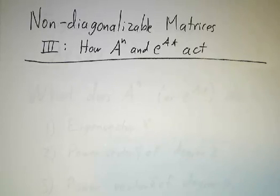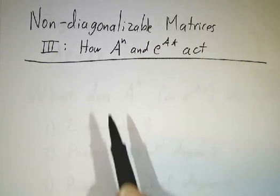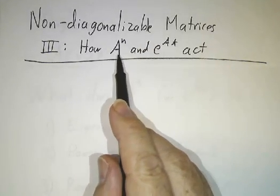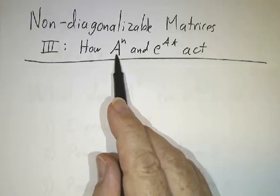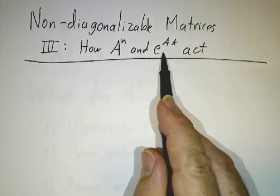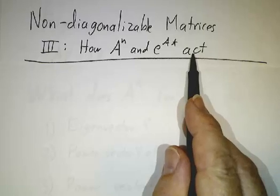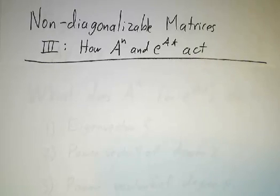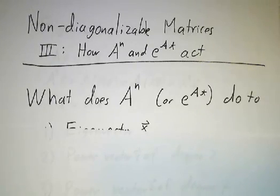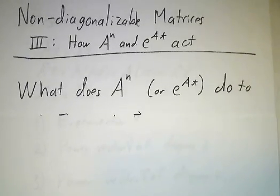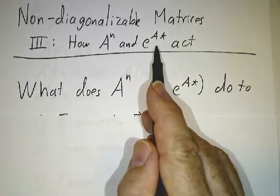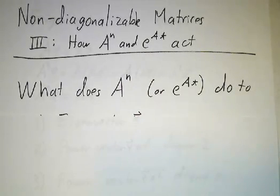Okay, and this is the last of our series of lectures on non-diagonalizable matrices, and we're going to look at what a power of a non-diagonalizable matrix looks like, or what the exponential of a non-diagonalizable matrix looks like. By look like, I mean how it acts on a basis. In our last video, we saw that there's always a basis of power vectors. So we really want to know what happens when A to the n or e to the At hits a power vector. We're going to do this in stages.